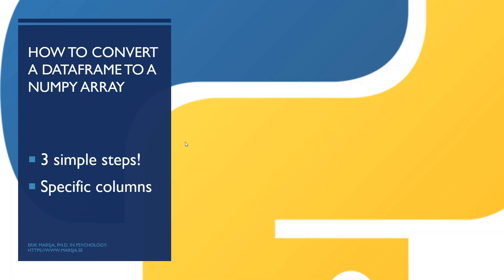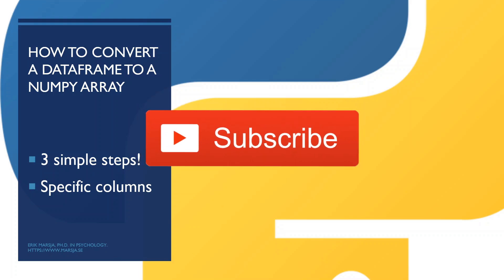In this Python pandas tutorial you have learned how to convert a pandas data frame to a numpy array in three simple steps: load the needed libraries, create your data frame, and convert the data frame to an array using the to_numpy method. We also learned how to select specific columns and convert them to numpy arrays, and how to select certain data types. You can also load your data from a CSV or Excel file — check the blog post linked in the description for more examples. Make sure you subscribe to the channel and hit that thumbs up button. Bye!